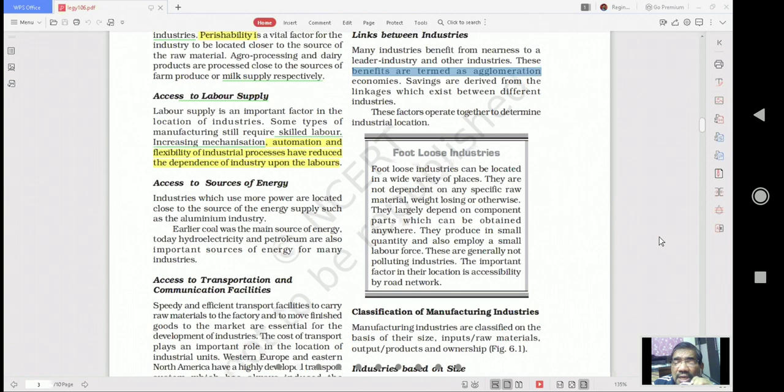They are largely dependent on components which can be obtained anywhere. They are produced in small quantities and also employ a small amount of labor force. A good example of a footloose industry would be computers.